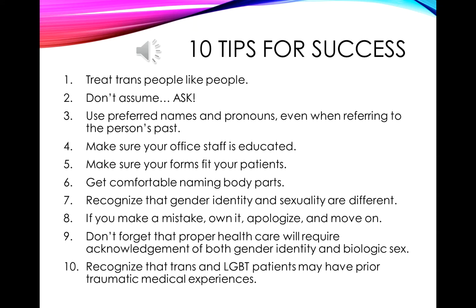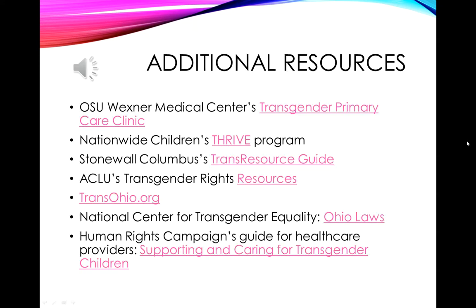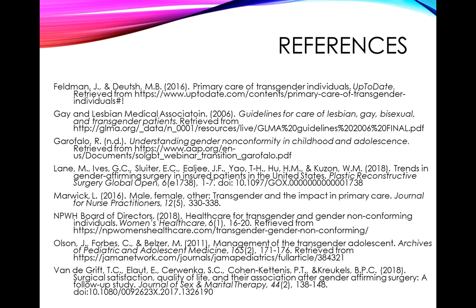I wanted to draw your attention to some resources that might be useful. We have a number of great resources in Columbus. One to highlight is Nationwide Children's Thrive Program, which is a program for children with differences in disorders of sexual development and complex genitourinary conditions — including urostomies, ambiguous genitalia, or endocrine disorders causing late sexual maturation — and which can also be a useful program for children who identify as transgender. If you have any questions, please feel free to contact me, and I will post these notes for you to review. Thank you so much.